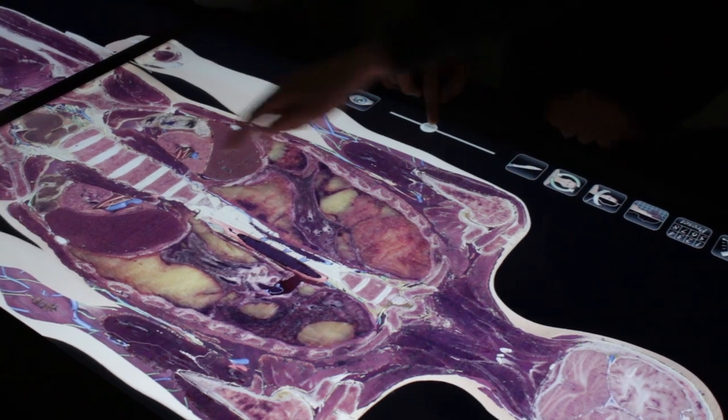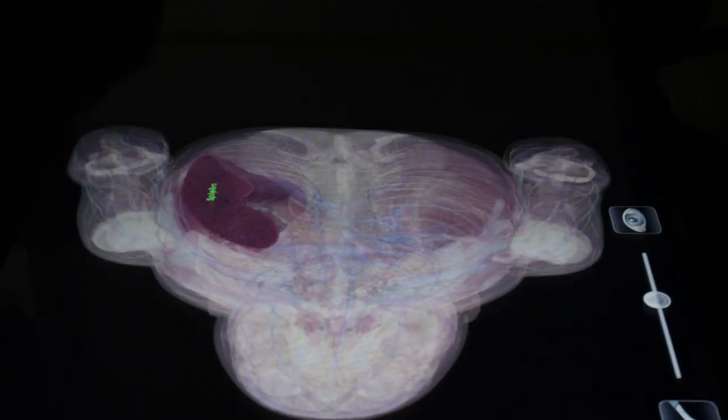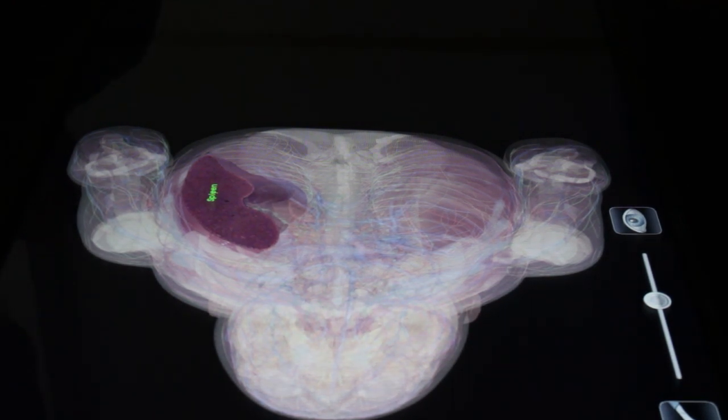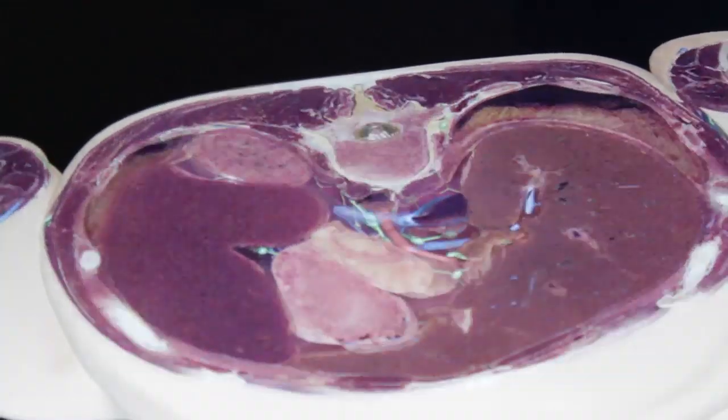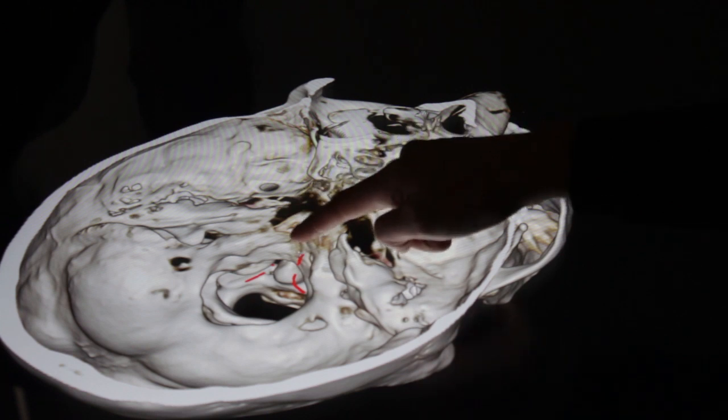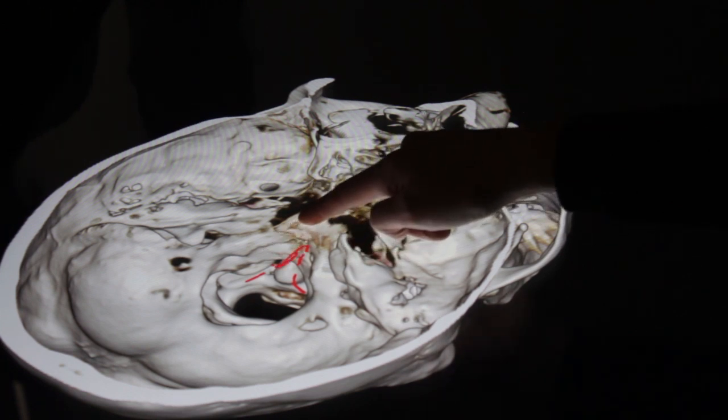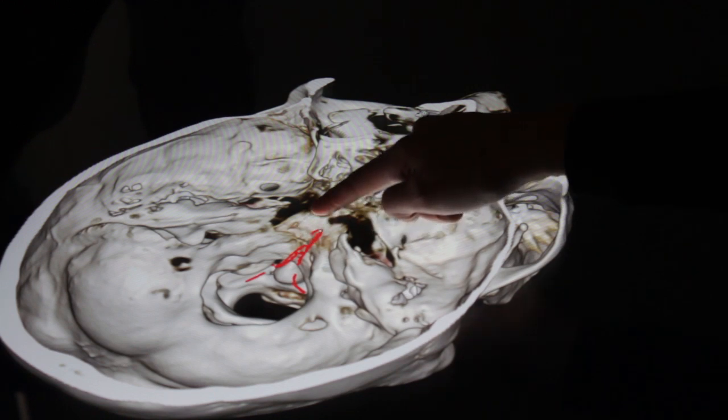An Anatomage Table is a different way of learning anatomy in that it is more interactive for the students. They get the opportunity to essentially perform electronic dissection, and if they do decide to look for an organ or structure and make a mistake, they can just start from the beginning and work through again. It gives the medical students an opportunity to challenge their understanding, and if they don't quite get it right the first time, there's no problem.